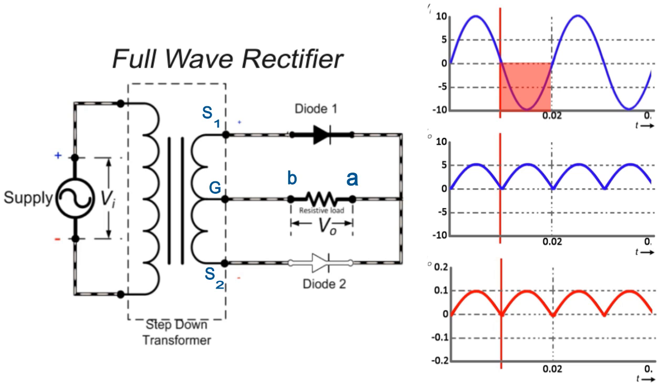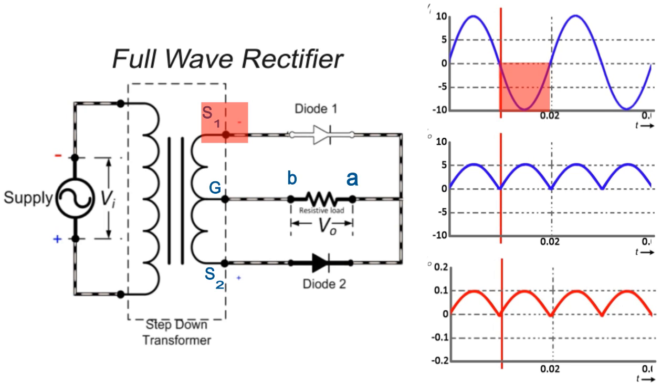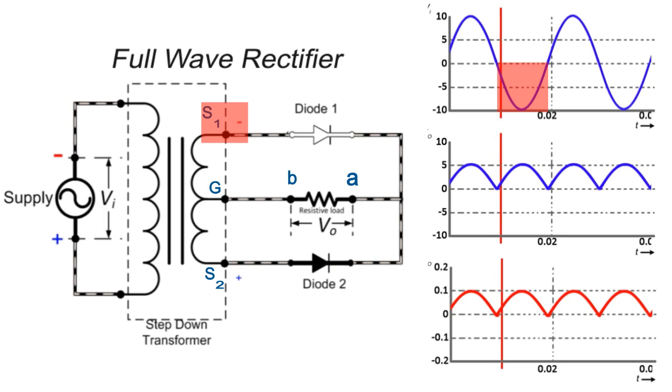During the negative half cycle, the secondary terminals S1 becomes negative and S2 becomes positive. At this instant, this point is at negative potential and this point is at positive potential with the zero reference point being the ground.